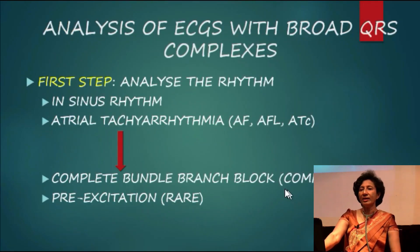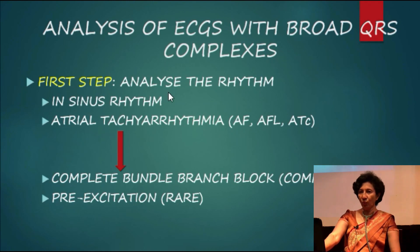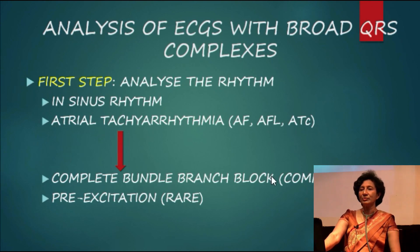When it comes to the analysis of ECGs with broad QRS complexes, the first step is analyzing the rhythm. When you hold the ECG and see broad QRS complexes throughout, concentrate on the rhythm first. If it is in sinus rhythm, or if you can see atrial tachyarrhythmia like atrial fibrillation, atrial flutter, or atrial tachycardia, the most likely cause for broad QRS complexes is complete bundle branch block — either right bundle or left bundle branch block.